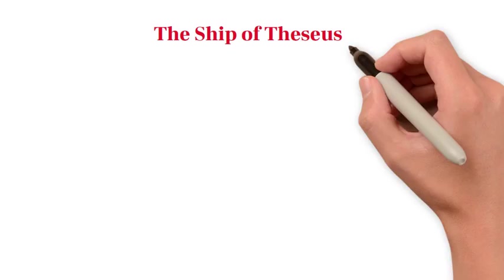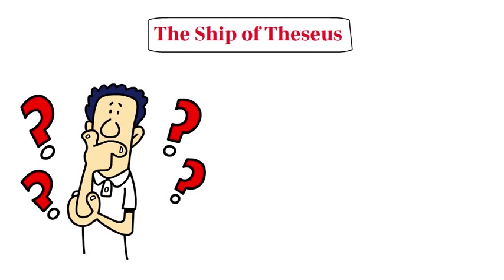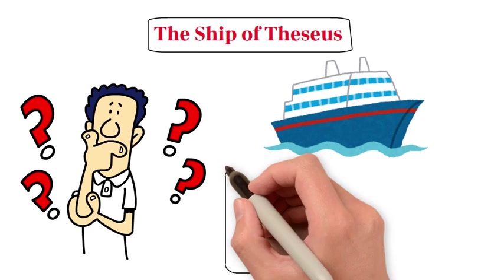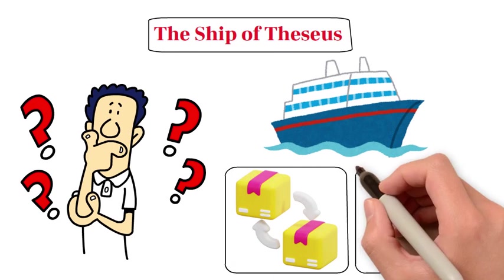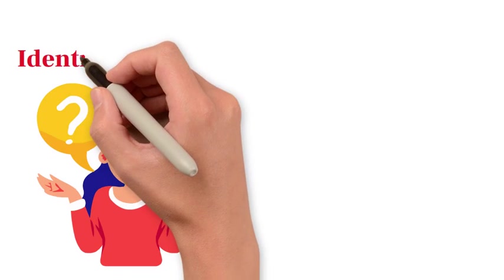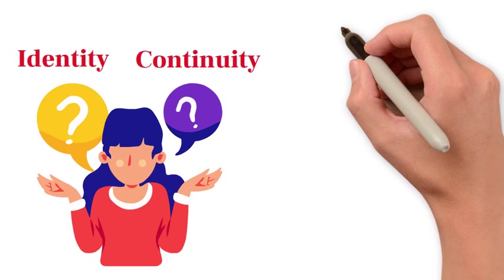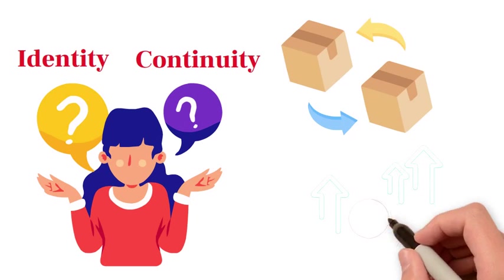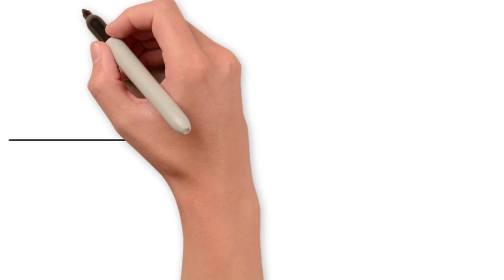The Ship of Theseus paradox poses a simple question: If every plank of a ship is gradually replaced over time, is it still the same ship? At its core, it challenges our understanding of identity and continuity. As each part is replaced, the physical form evolves, blurring the line between sameness and change.